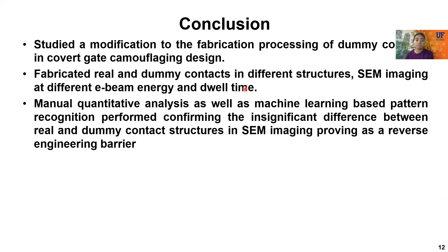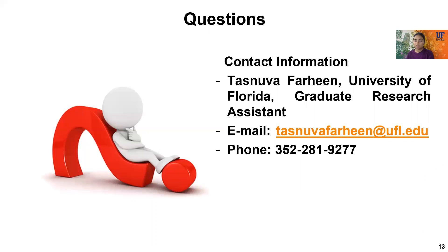In conclusion, we studied a modification in the fabrication of covert gate camouflaging design. We fabricated real and dummy contacts in different structures and performed ACM imaging in different operating conditions. We then did manual quantitative analysis as well as machine learning based pattern recognition, confirming the insignificant difference between the real and dummy contact structures in ACM imaging, proving it as a reverse engineering barrier. If you have any further inquiries, you can reach out to me. Thank you.